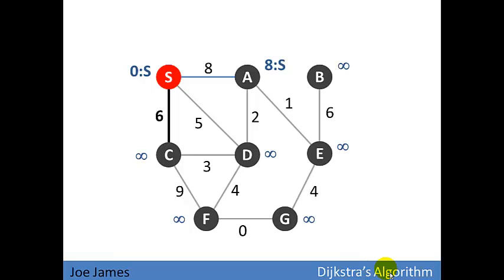Next we'll relax edge SC, with a weight of 6. This gives us a distance from S to C of 6, and the last vertex in the path is S. Next is edge SD, which gives us a path to D with distance of 5 coming from vertex S.